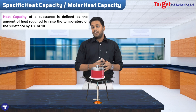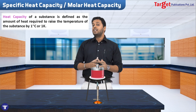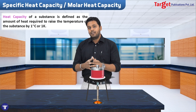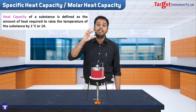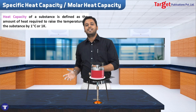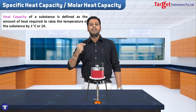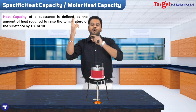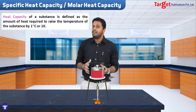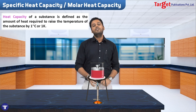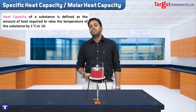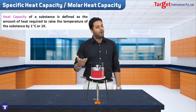One important thing to keep in mind: in this concept, I am dealing with temperature difference, not the temperature itself. I am talking about the increase in temperature. This increase can be expressed in degree Celsius or in Kelvin — for example, 0°C to 1°C is a difference of one, and similarly 273 K to 274 K is also a difference of one. Since we are talking about difference in temperature, we can use either degree Celsius or Kelvin. So, heat capacity is the amount of heat required to raise the temperature of a substance by one degree Celsius or one Kelvin.